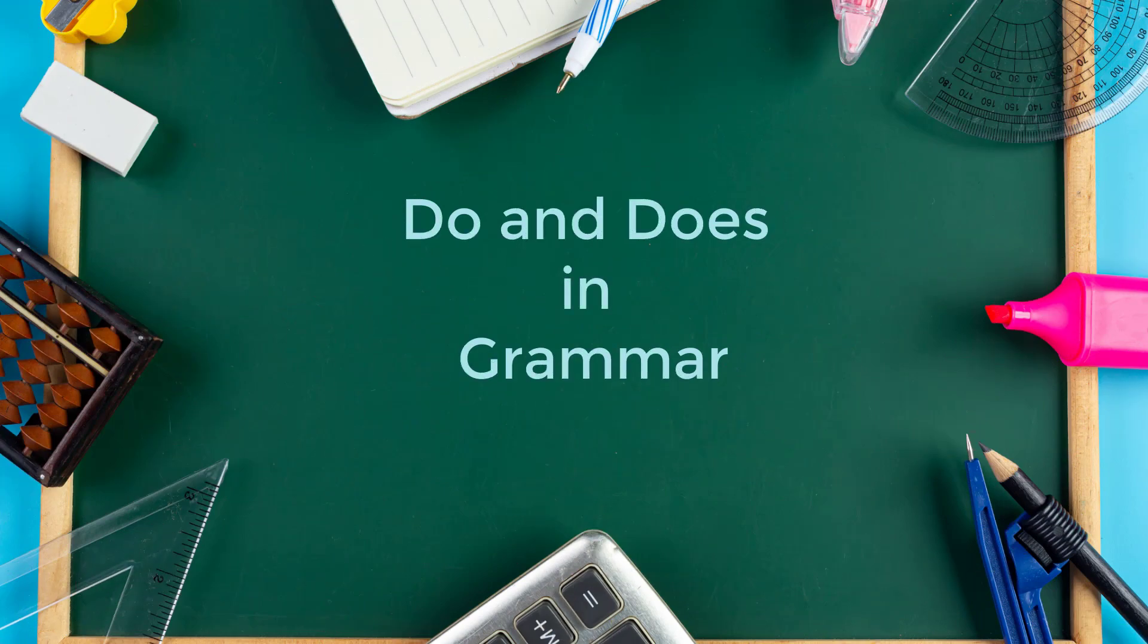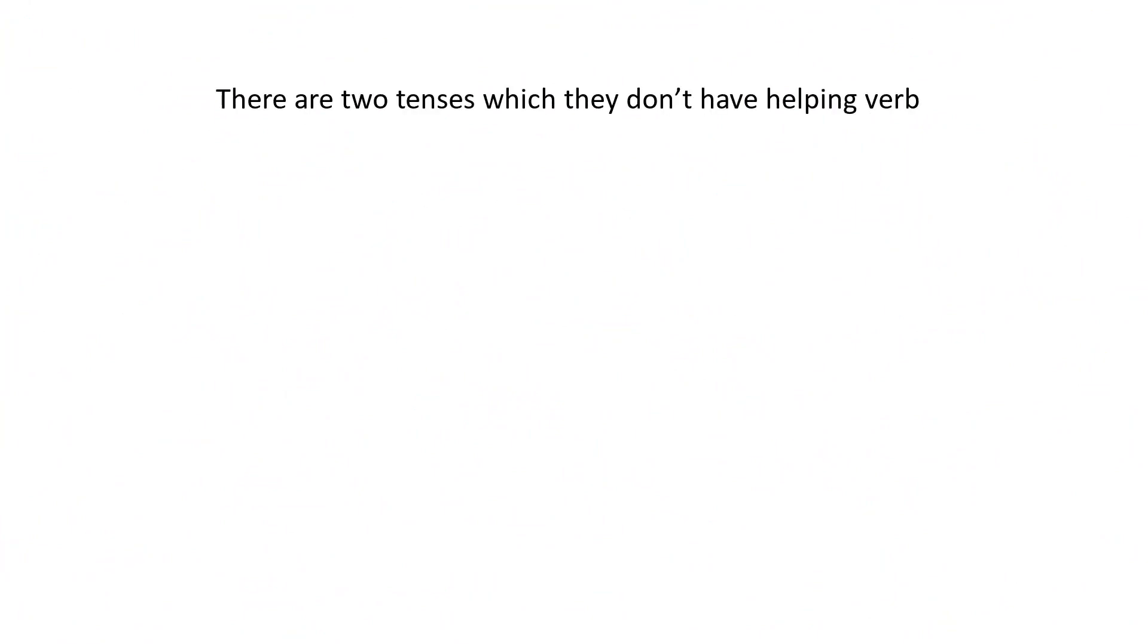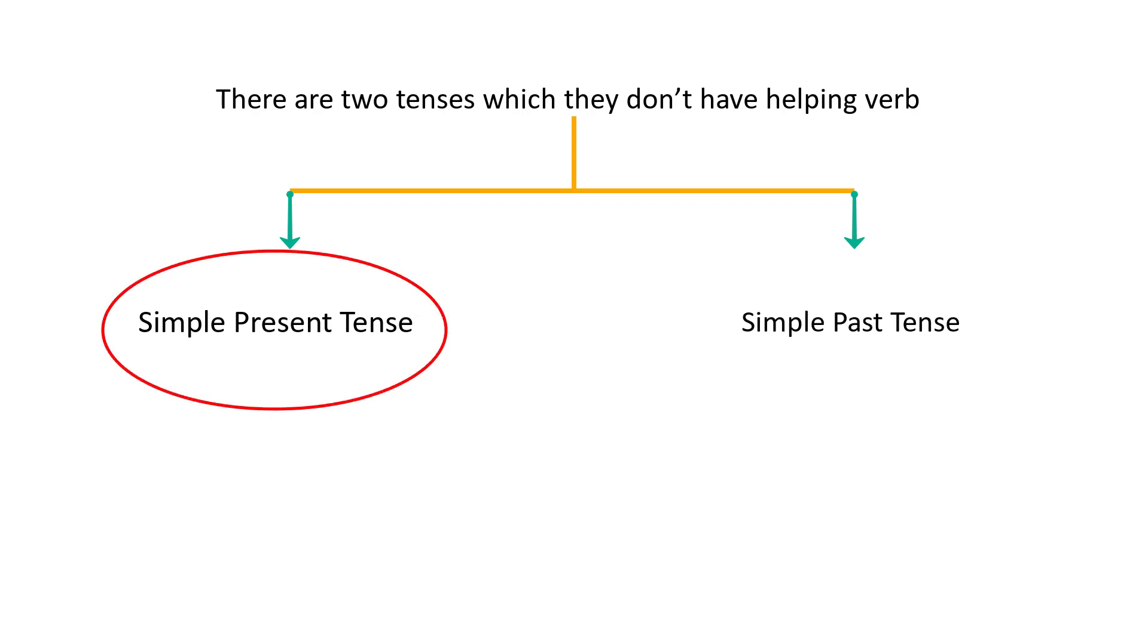Hello, our grammar for today is all about do and does in grammar. In English, there are two tenses which don't have a helping word. They are simple present tense and simple past tense. In this session, I am going to talk about simple present tense.